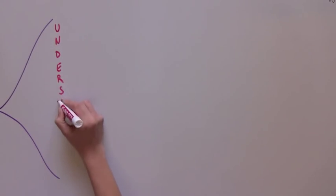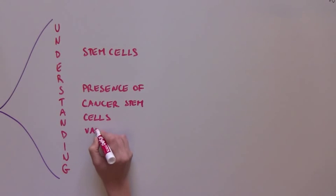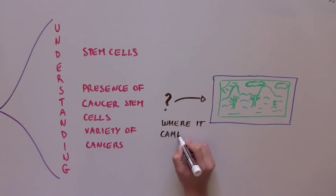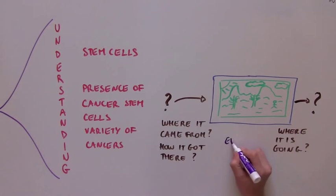By broadening our understanding of stem cells and the presence of cancer stem cells in a variety of cancers, scientists are trying to understand not just a static picture of a cancer, but where it came from, how it got there, and where it is likely to go as the cells continuously evolve and change.